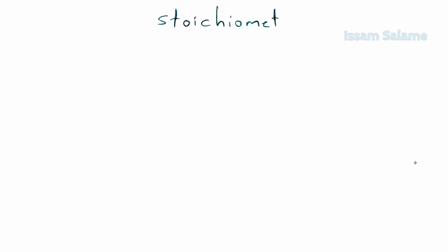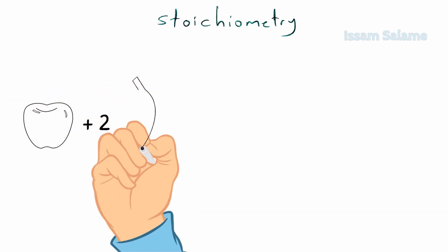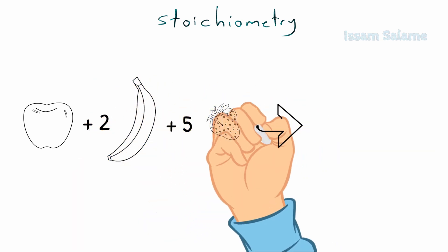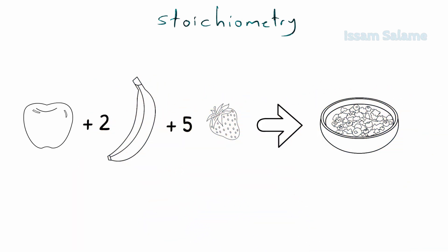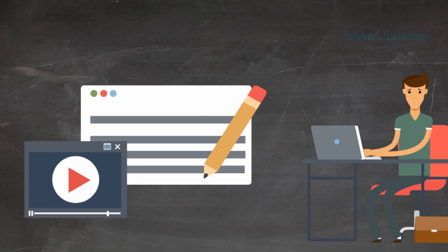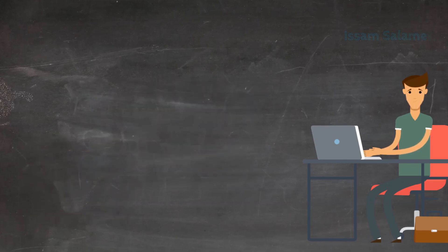To understand stoichiometric chemistry, look at the following example: we need one apple, two bananas, and five strawberries to make a dish of fruit salad. How many bananas do you think we need if you want to make two dishes of the same fruit salad? Welcome to Skoola, your online school. You may check your understanding by solving the end-of-video questions, and good luck.